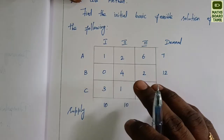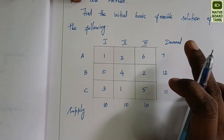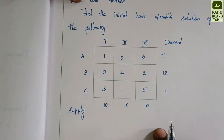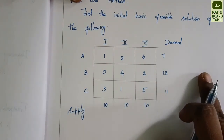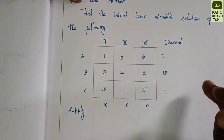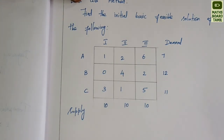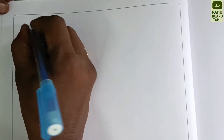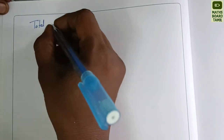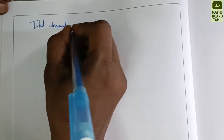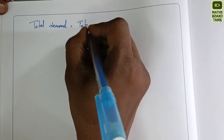Let's talk about the total demand and supply. The total supply is 30. The total demand is also 30. This is a balanced problem, meaning total demand is equal to total supply.